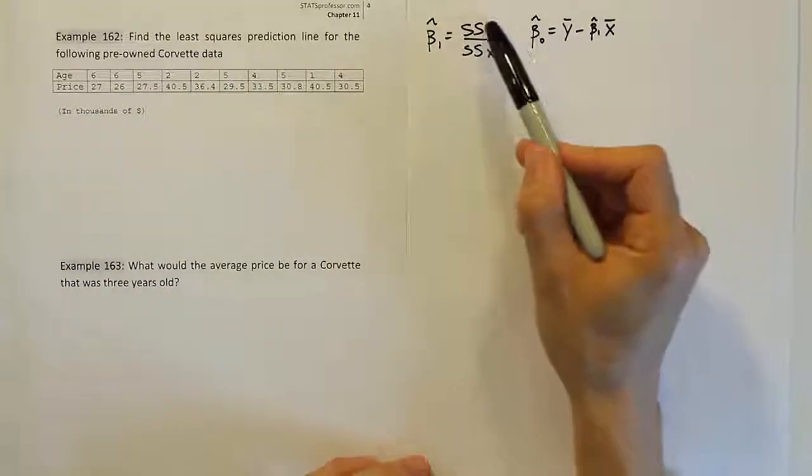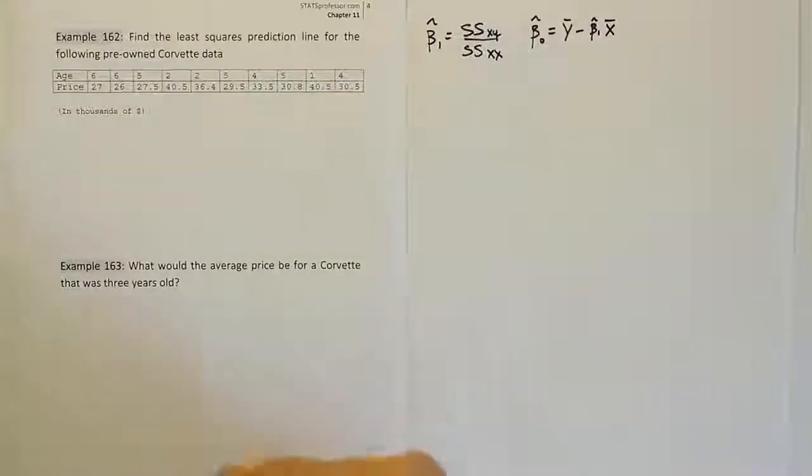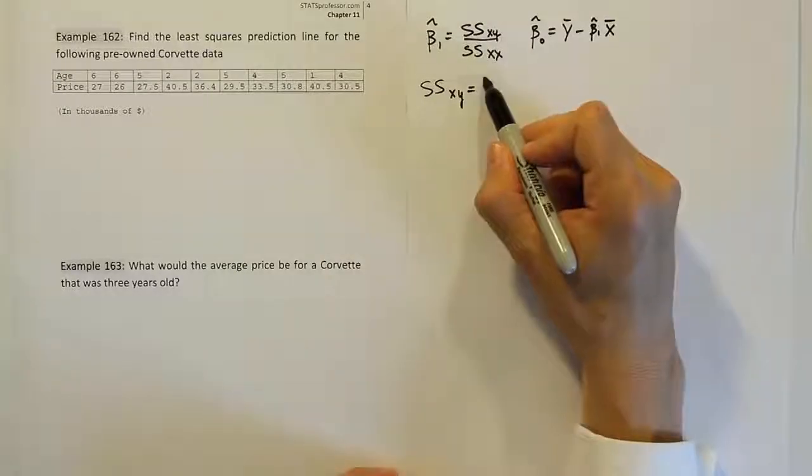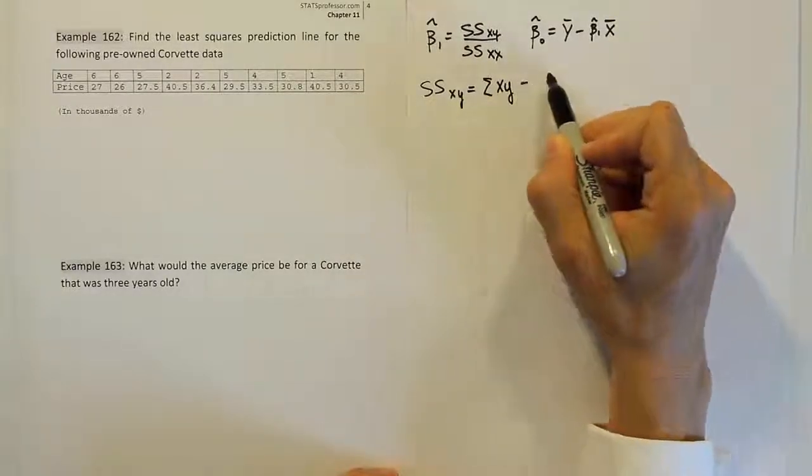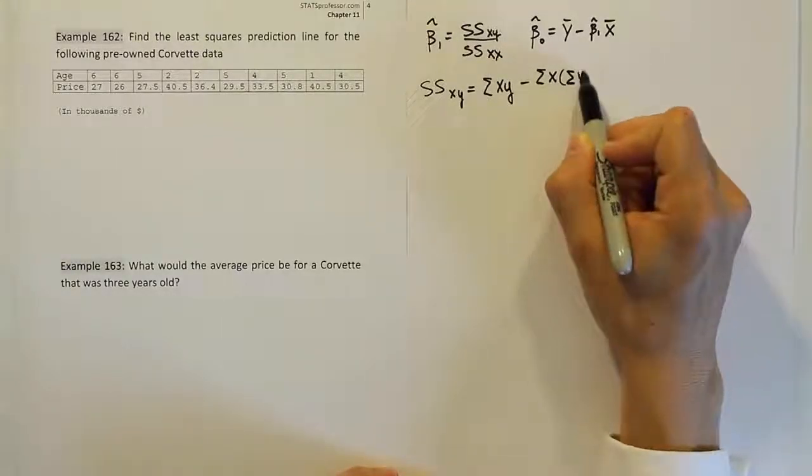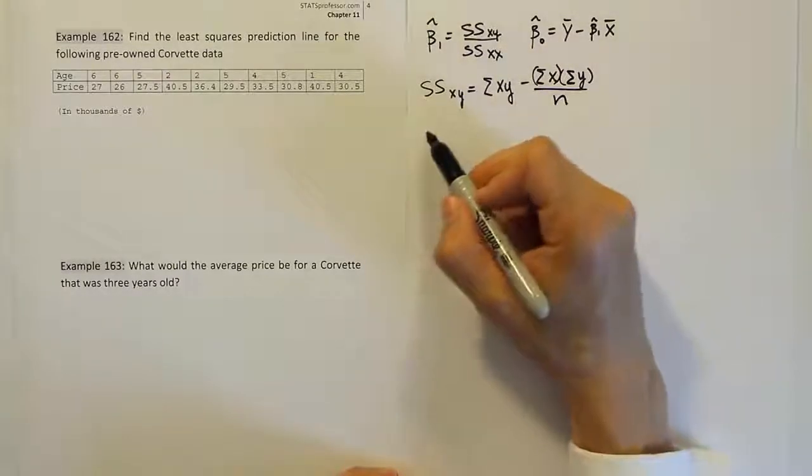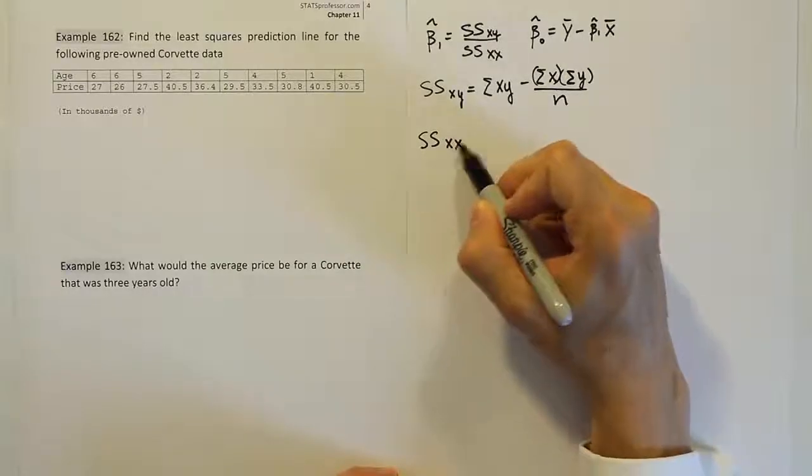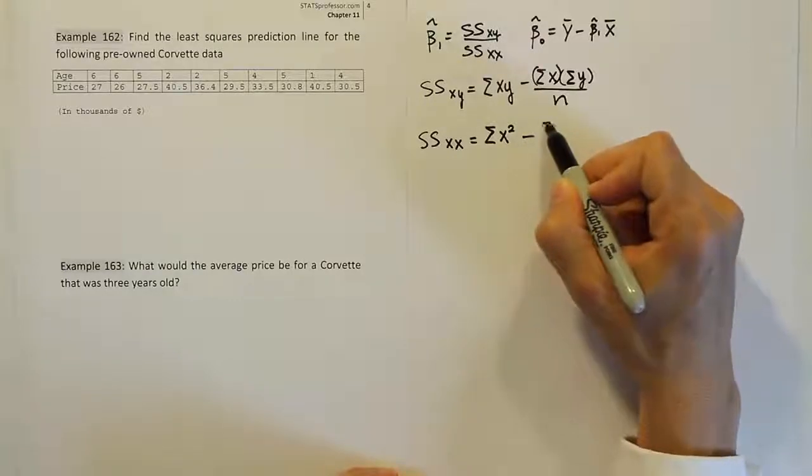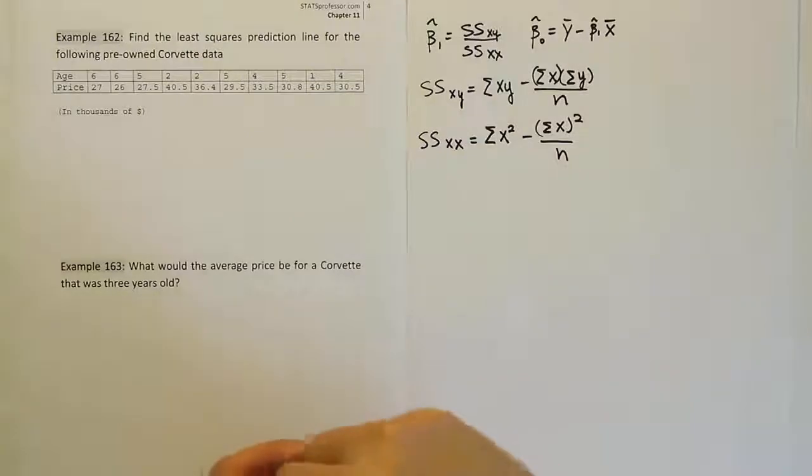So these are the two formulas we need to fill in. And to do those two formulas, we need to come up with the sum of square for xy, sum of square for xx. To do that, we're going to need to use, for the first one, the sum of xy minus the sum of x times the sum of y, both of those divided by the sample size n. Then for the second one, the xs xx, we're going to need to have the summation of x squared minus the sum of x quantity squared over n.